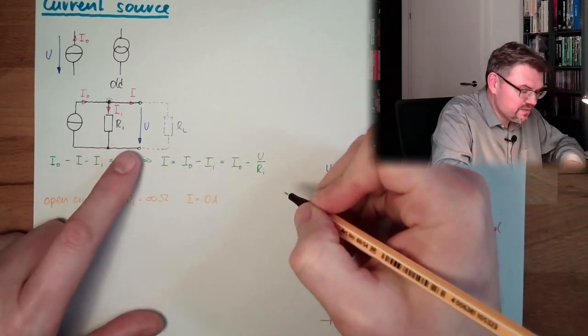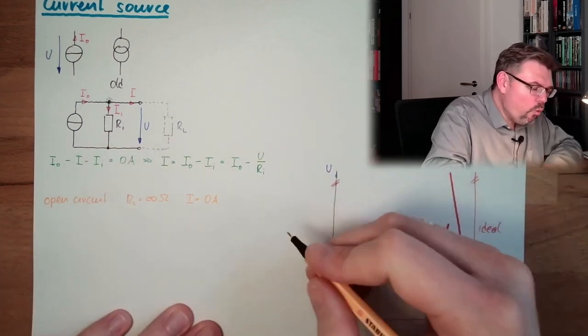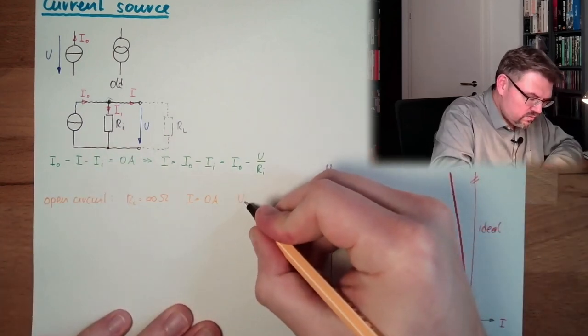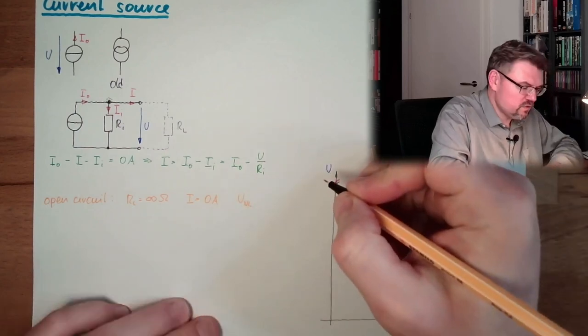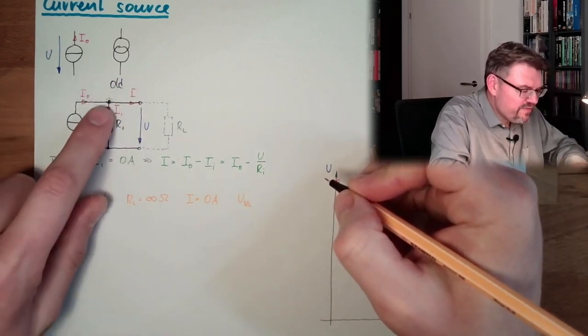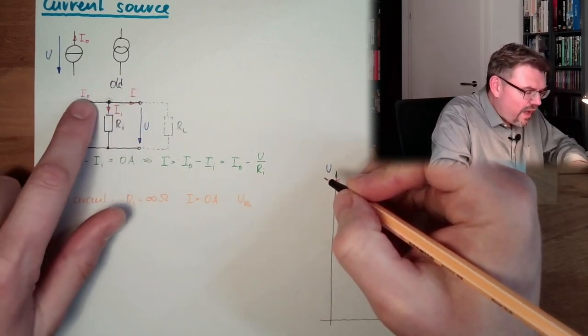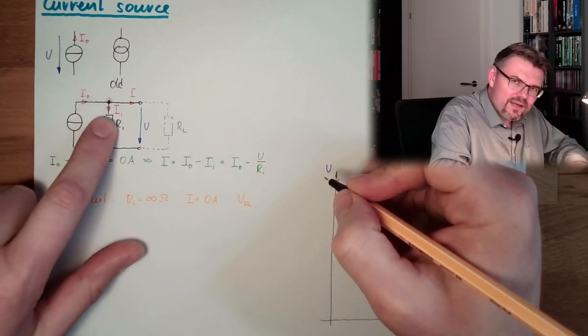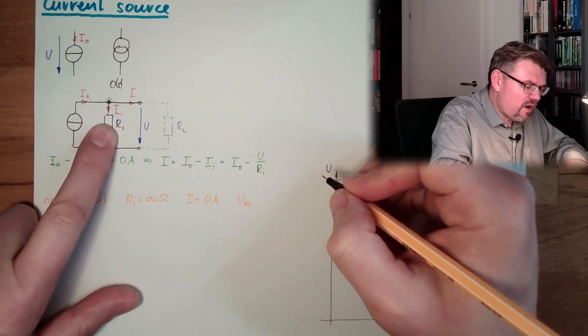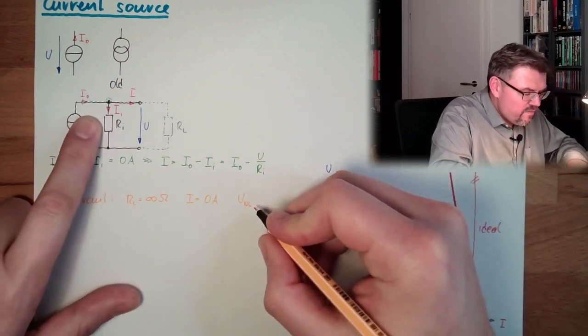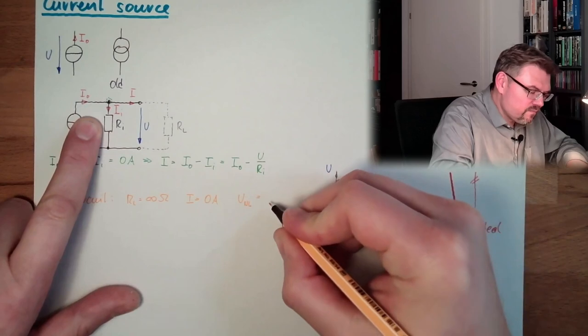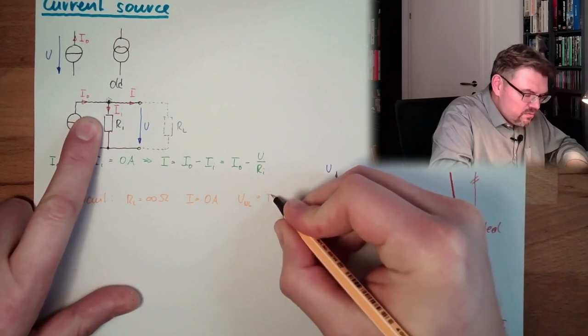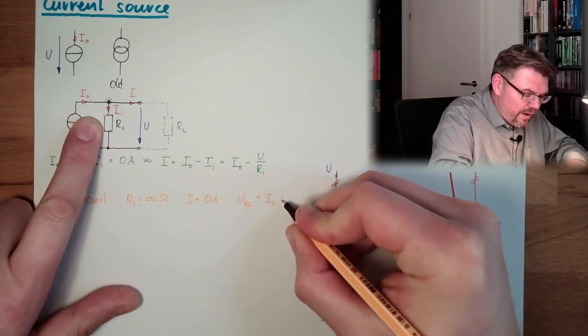So, this means I equals zero amps. RL equals zero amps. And what is now the no-load voltage? What voltage will that be?